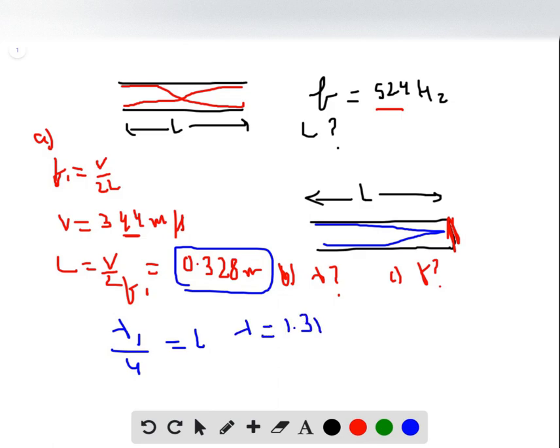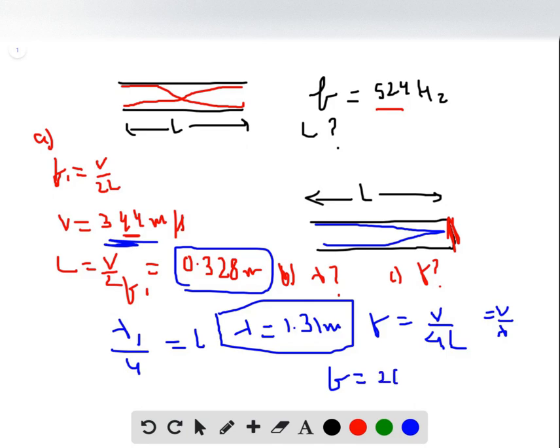That's your part B. Now for part C, we know that frequency is simply velocity over wavelength, which is 4L. So frequency is 344 meters per second divided by lambda, which gives me 262 Hertz.